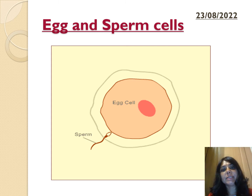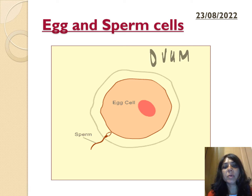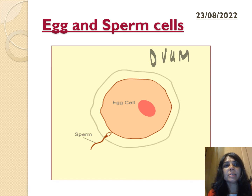Here you can see the sperm cell trying to go through the egg cell, also known as the ovum — you may see the word 'ovum' or 'egg cell' in the exam. The head of the sperm is quite pointy so it can get through the cell membrane, puncture it, and get in so the nucleus of the sperm and the egg cell can meet and fertilize.